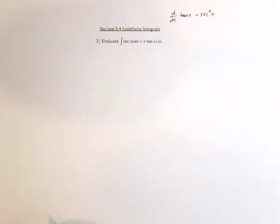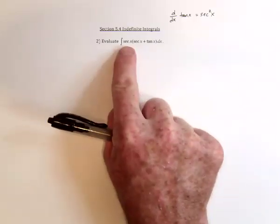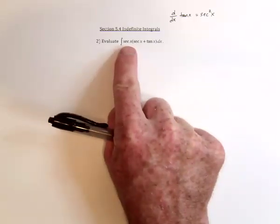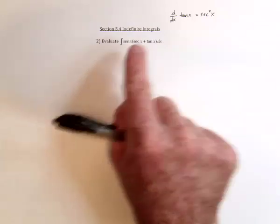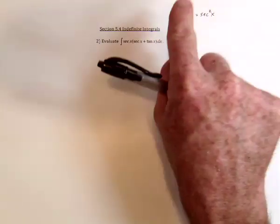So as soon as I see this problem, I look at that and say, I need to multiply through because I need to get secant squared. Because the antiderivative of secant squared would then be tangent.